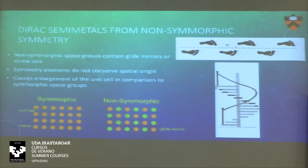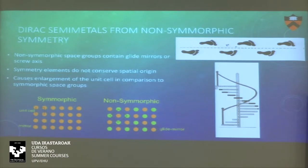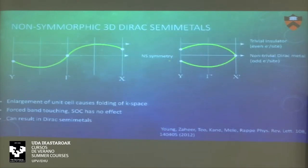Just to briefly review: non-symmorphic symmetry arguments are symmetries that do not conserve spatial origins — we have some kind of glide plane or screw axis that enlarges your unit cell. This is kind of the same thing as band folding that chemists discuss. We have a smaller lattice in a symmorphic case and a larger real-space lattice in a non-symmorphic one, and what that does to k-space is fold the bands, similar to what we did for the 1D chain of hydrogen atoms in the first Brillouin zone.